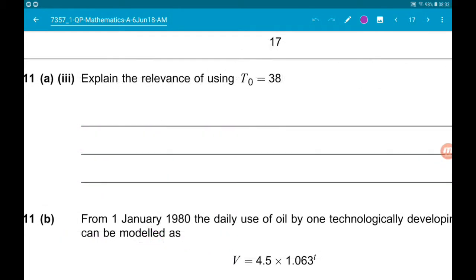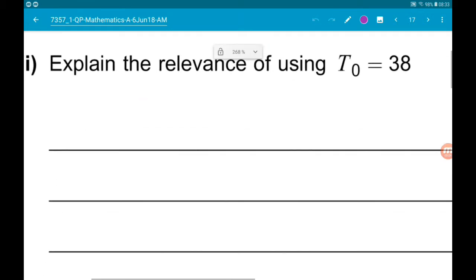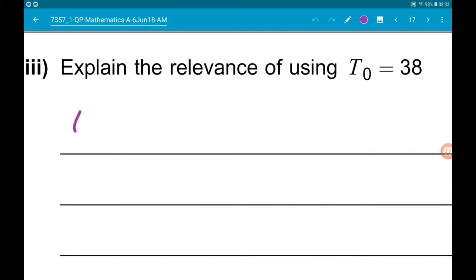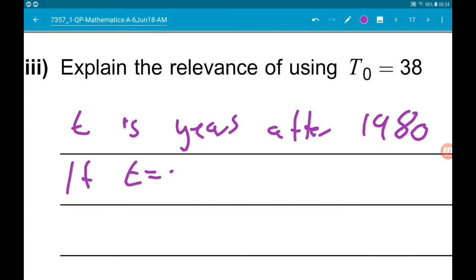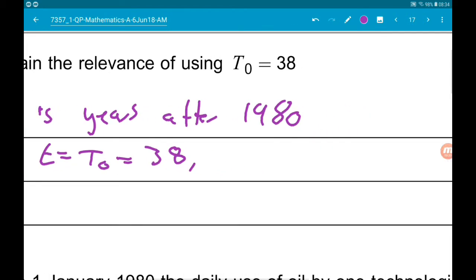Okay, part three asks to explain the relevance of using t0 is 38. So in the original model, t is years after 1980. So if t is equal to t0, which is 38, that means we're starting in the year 2018.